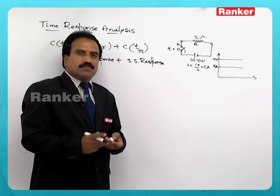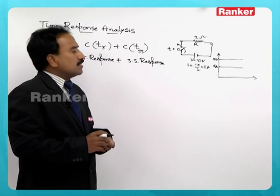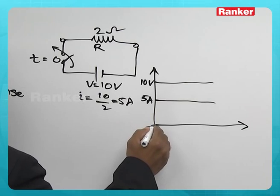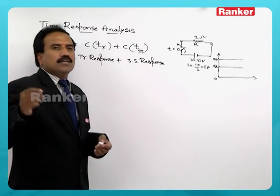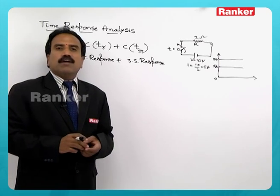It is instantaneous. The current in resistive circuit reaches to 5 amperes in 0 time and the steady state current is 5 amperes.